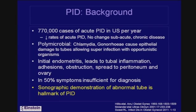Now let's turn to pelvic inflammatory disease, a very common disease involving the fallopian tubes. There are fewer than about three-quarters of a million new cases of acute PID in the United States per year. Overall rates of acute PID are decreasing, but there is probably a significant background of subacute or chronic disease. PID is a polymicrobial infection — once thought to be only gonorrhea, then chlamydia — and once there has been epithelial damage, superinfections with opportunistic organisms can occur. PID reaches the fallopian tubes after an initial endometritis, leading to tubal inflammation, adhesions, and eventually peritoneal spread or obstruction and dilatation.